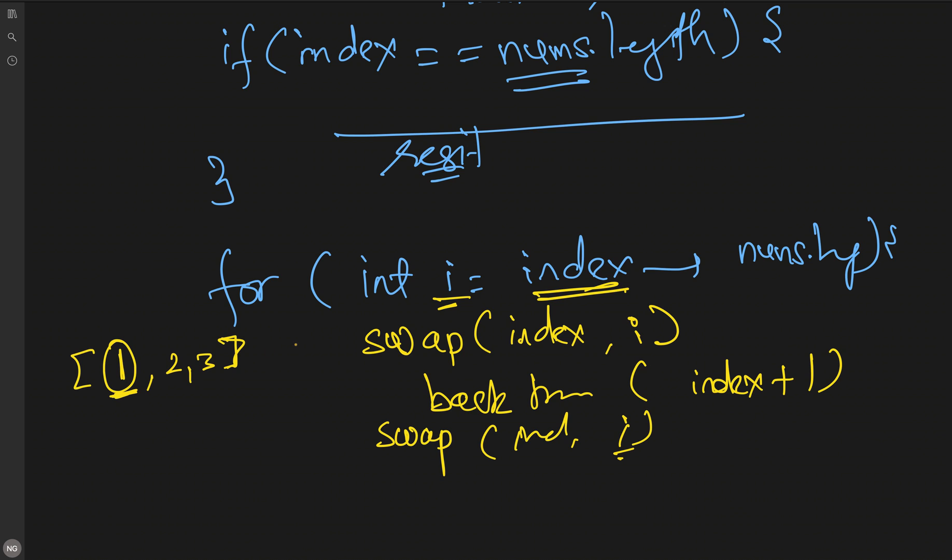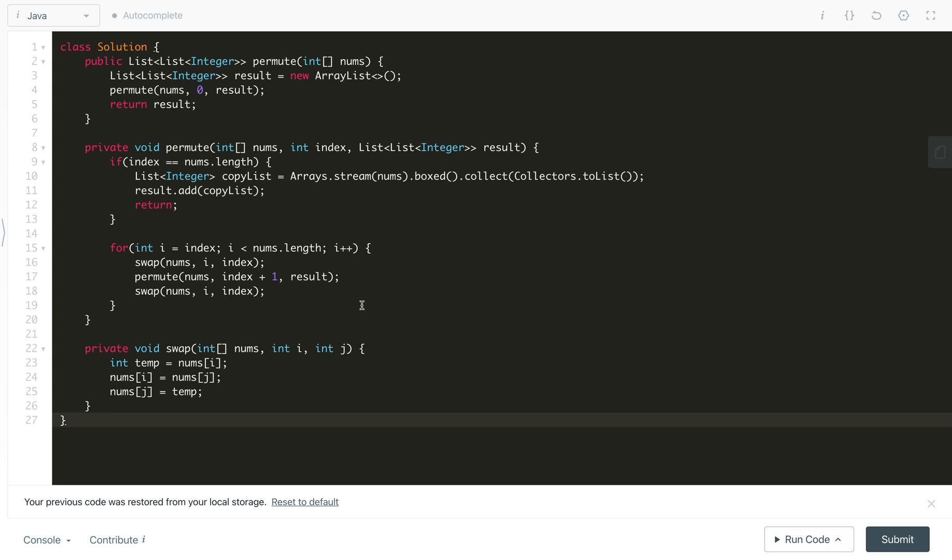Now you can try to pause the video and implement the code by yourself. Here is the code I have already implemented. This is our main method where we are declaring a result list of lists as output and we are calling the permute method, which is the backtrack method. Here we are passing this and index initializing from 0. Now we are checking if index is nums.length, we are creating a list from the array and we're using boxing, converting primitive data type into the reference object, Integer object, then we are storing into a copy list and then storing back into the list of list in our result variable. Otherwise we are iterating from index to the length of our array and first swap that index i element with the index element and then backtrack it here.